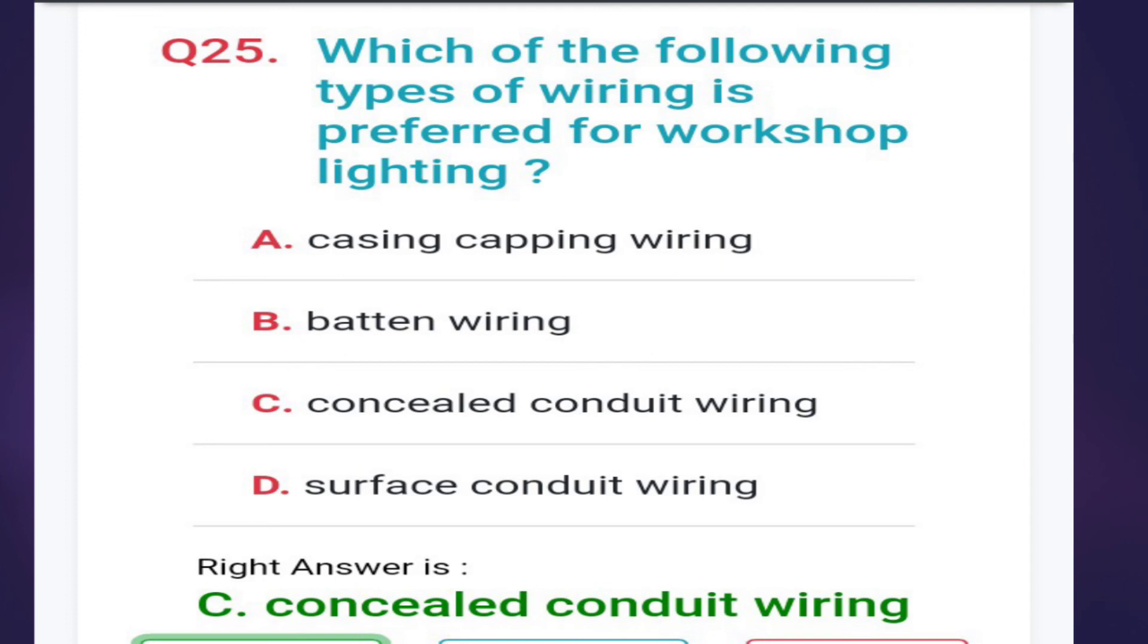Next: which of the following types of wiring is preferred for workshop lighting? The correct answer is option C, concealed conduit wiring.